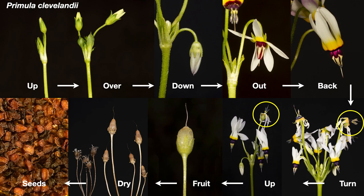Soon the petals fall off, but the sepals remain. The fruit is circumcissile. When dry, the tip pops off and the seeds spill out when the stalk blows in the wind. Their amber to brown seeds are small, irregularly shaped, and do not have a wing or membrane around their edge. By summer, the entire plant has died off above ground and entered dormancy below ground, which continues until next winter.